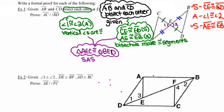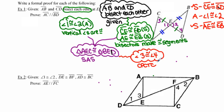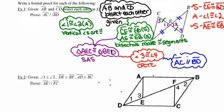Now that those triangles are congruent, CPCTC tells me that all of their corresponding parts are congruent as well. So angle C and angle D must be congruent corresponding parts — I'm going to use CPCTC to make angle 3 congruent to angle 4. Looking carefully at the picture, angles 3 and 4 are alternate interior angles for segments AC and BD. Now that the alternate interior angles are congruent, I can conclude that line segment AC is parallel to line segment BD, because when alternate interior angles are congruent, lines are parallel.